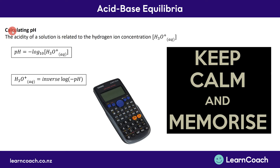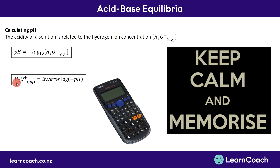Moving on to how we use this concept to answer questions. Most acid-base questions are all about calculating pH, and the acidity of any solution is related to the hydrogen ion concentration, so the concentration of H₃O⁺. H₃O⁺ is linked to pH in a log equation. pH is equal to negative log of H₃O⁺. A commonly made mistake when working out pH is people forget to put the negative sign in. By rearranging this equation, you can work out the concentration of H₃O⁺ if you have the pH: H₃O⁺ concentration equals the inverse log of the negative pH.